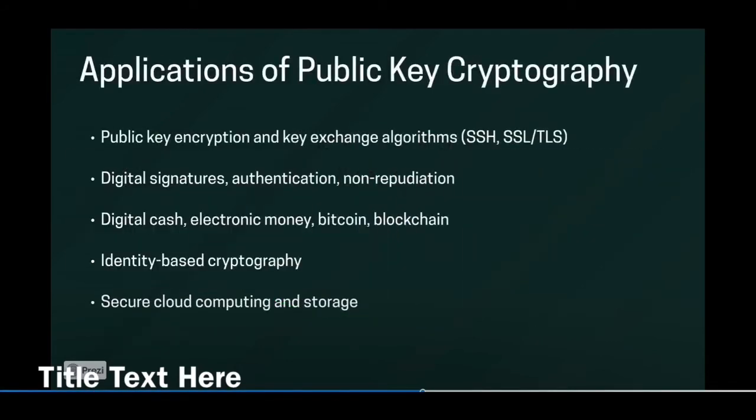One of the things an adversary can try to attack an RSA cryptosystem is to get the public key N and try to factor this number into a product of two large primes P and Q. In a classical setting, this is an intractable problem and it takes several centuries that you do not really have to worry too much about it. What are some other applications of public key cryptography? We've already discussed about public key encryption and digital signatures. Some other interesting applications include digital cash, electronic money, nowadays very popular Bitcoin and blockchain applications. We have a very interesting field called identity-based cryptography and also in secure cloud computing and storage, we rely a lot on public key cryptographic schemes.